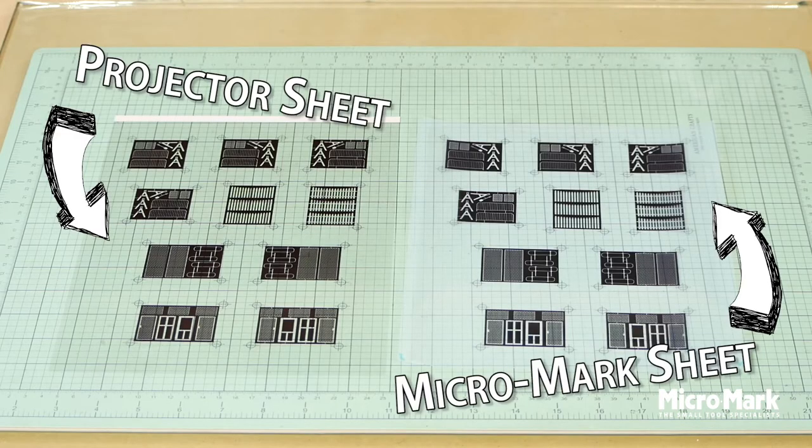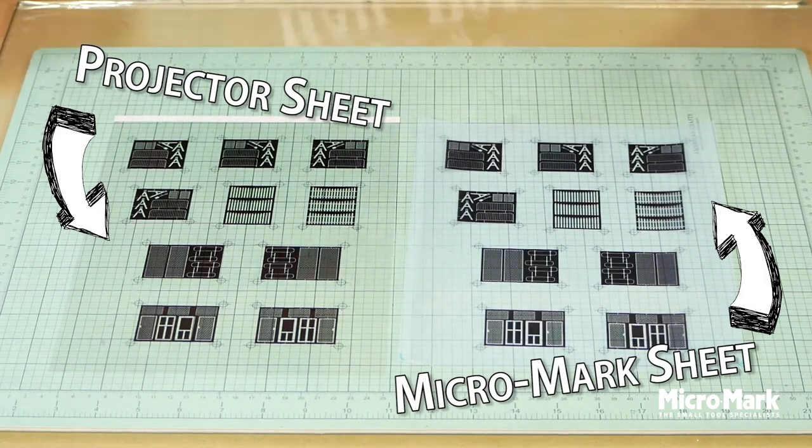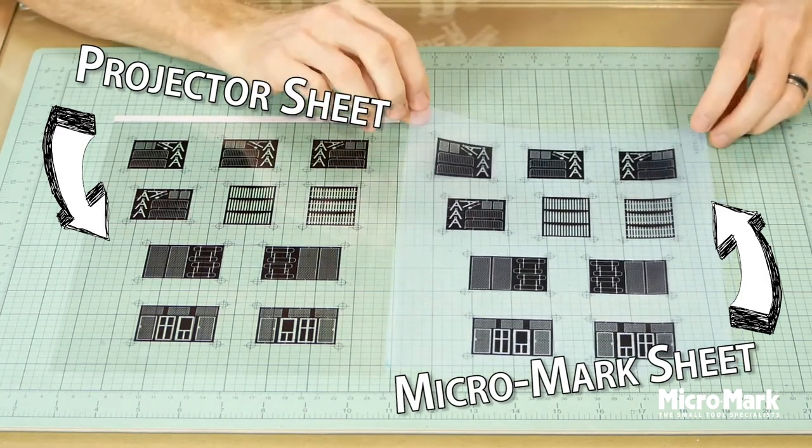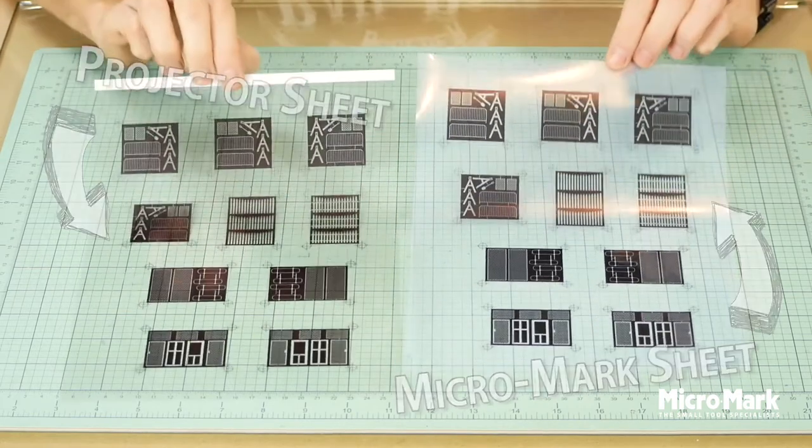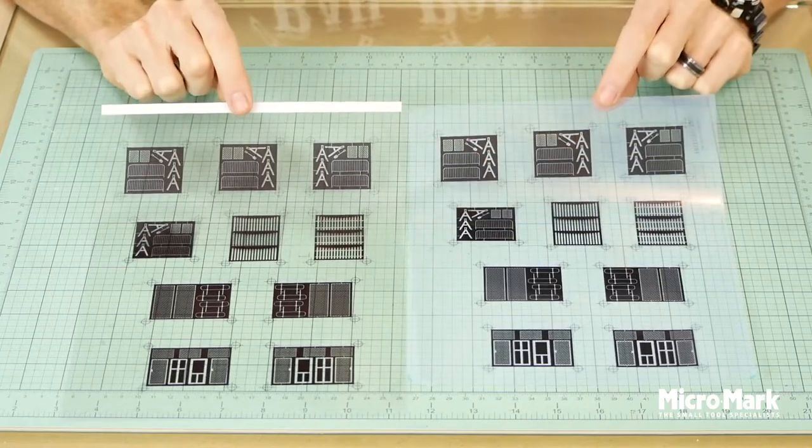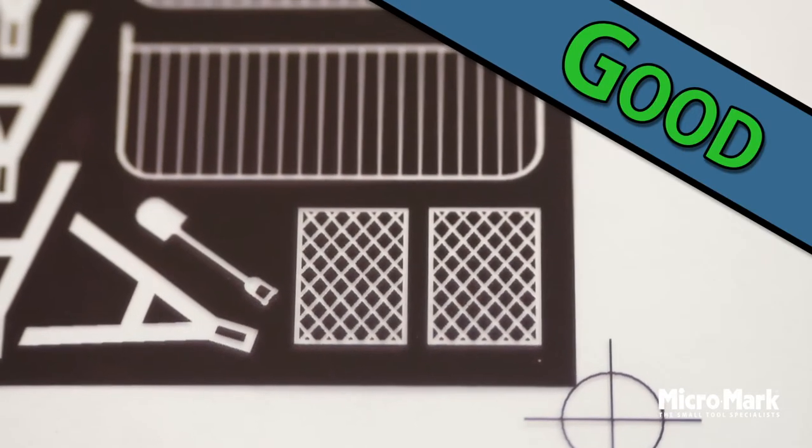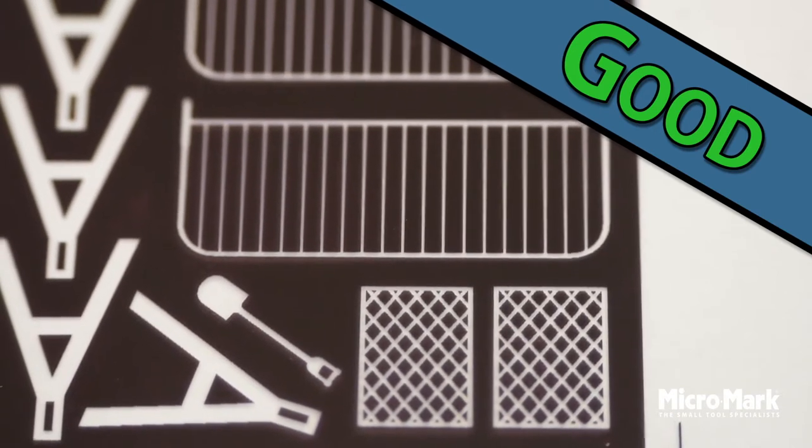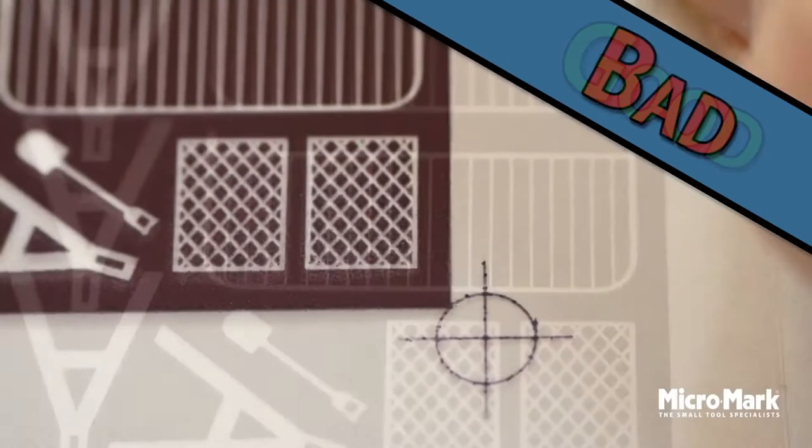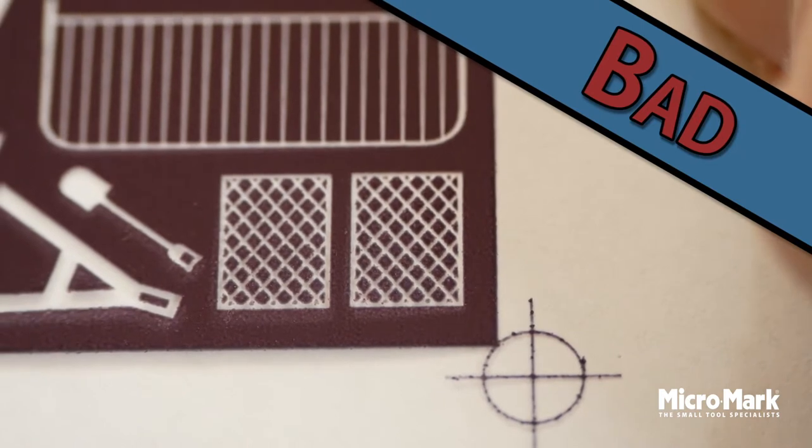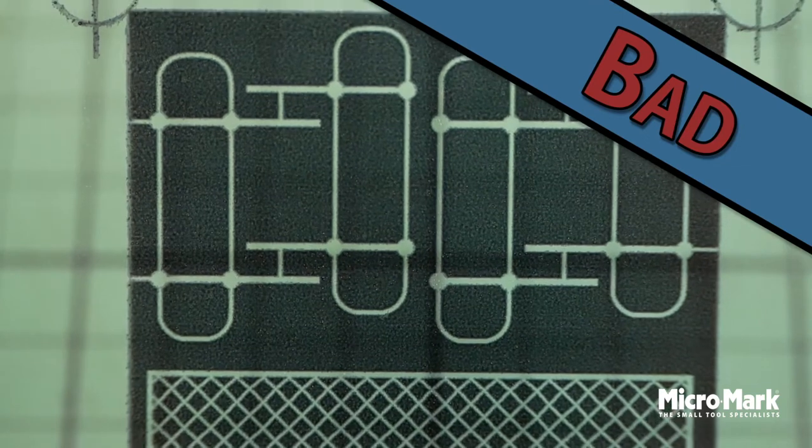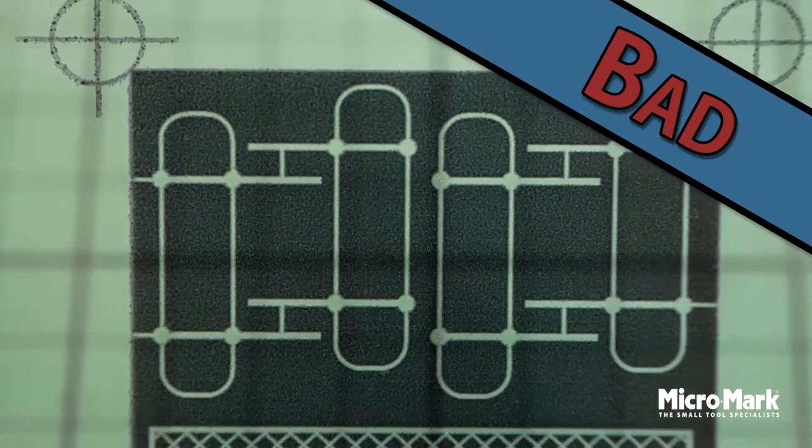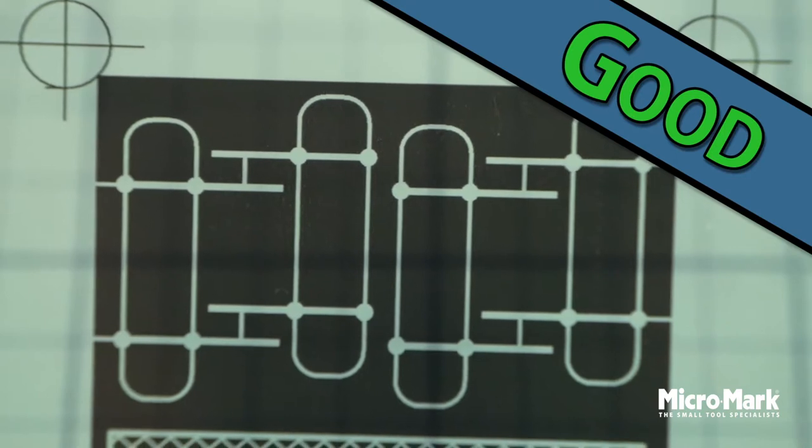If you're tempted to try overhead projector clear sheets instead of the Micromark sheets let me save you some time and money. On the left is a projector sheet and on the right is the Micromark clear sheet. They both look great but let's get a closer look. The Micromark sheet looks nice and crisp and the projector sheet in comparison looks terrible. The ink is uneven blotchy and more translucent compared to the smooth sharp and even Micromark sheet.